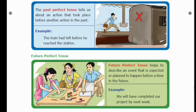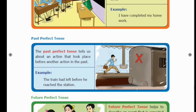Next, Future Perfect Tense. Future Perfect Tense helps to describe an event that is expected or planned to happen before a time in the future. Just as Present Perfect Tense is about something already completed that we speak about now, Future Perfect Tense is about something that will be completed before a future point in time.